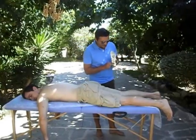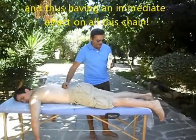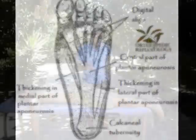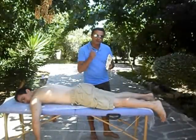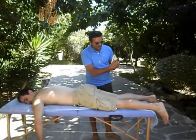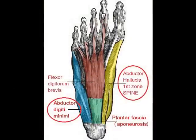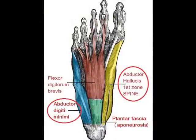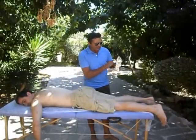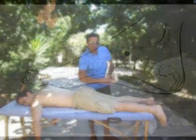The plantar aponeurosis, which is the area of the foot connected to this myo-fascial chain, has its origin at the calcaneus. Underneath the plantar fascia is also the first muscle group — digitorum brevis and the abductors of the small digit and the hallucis digit — and because they share a common origin with the plantar aponeurosis, this validates that the first zone is the spine in reflexology.